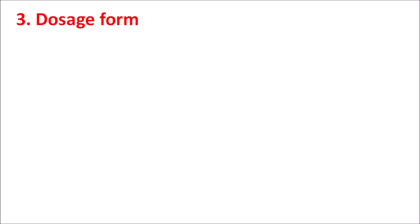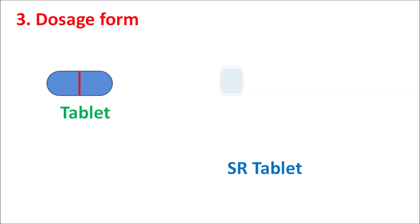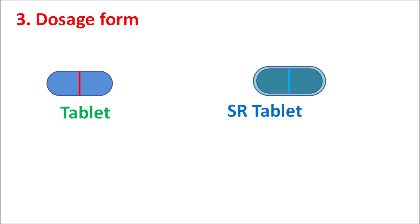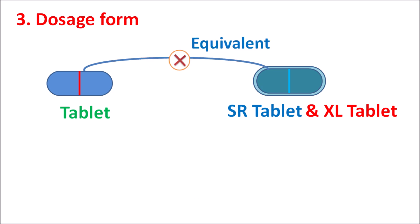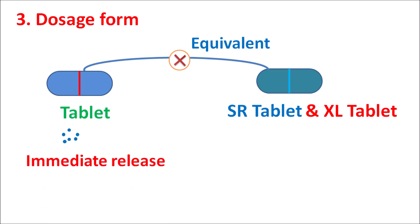The third concern is the type of dosage form. Bupropion is available as a normal tablet, an SR (sustained release) tablet, and an XL (extended release) tablet. These dosage forms are not equivalent because they release the drug in different ways. The normal tablet releases medication immediately, while SR and XL tablets have a special outer coat that allows for slow, sustained drug release. Therefore, the normal tablet is not equivalent to these forms and they should not be interchanged during treatment.